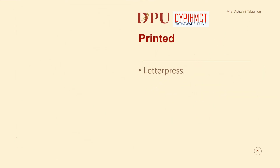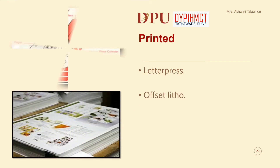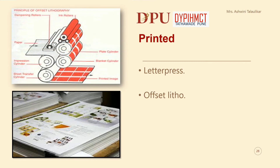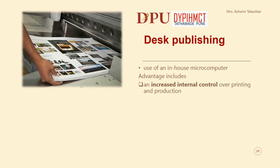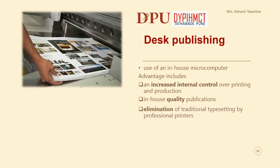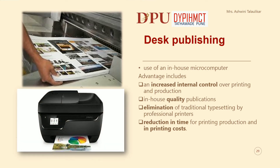Printed menus are available in two forms: letterpress and offset. Desk publishing uses an in-house microcomputer. The advantages include increased internal control over printing and production, in-house quality publications, elimination of traditional typesetting by professional printers, and reduction in time for printing production and in printing costs.